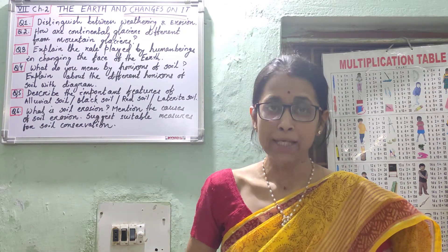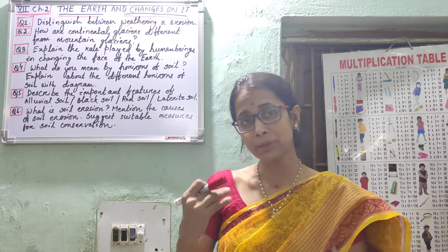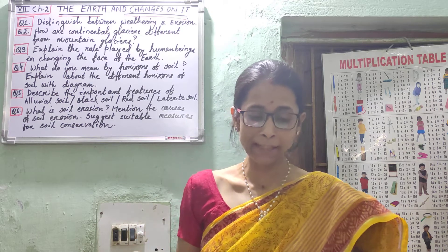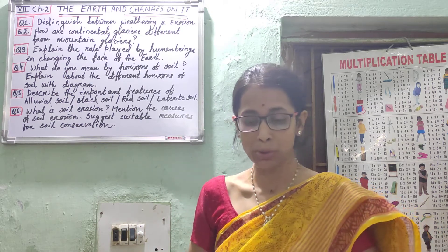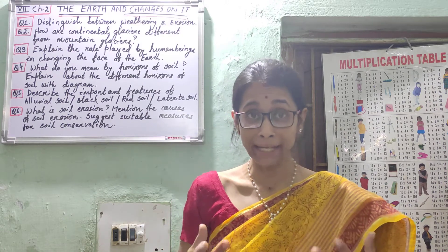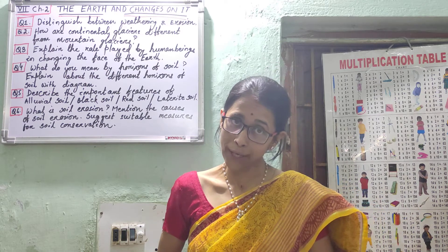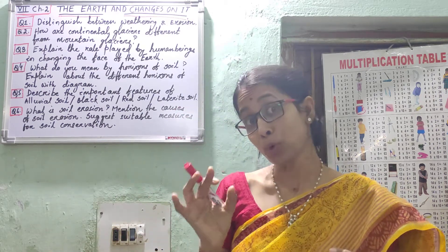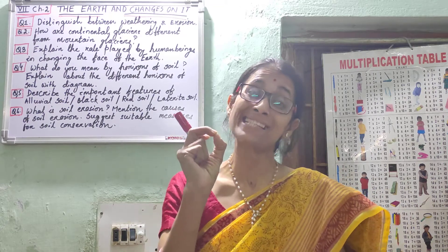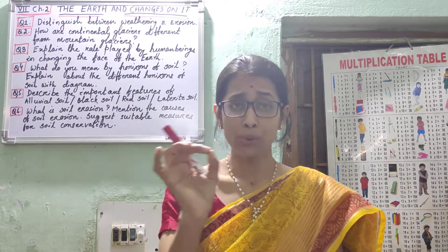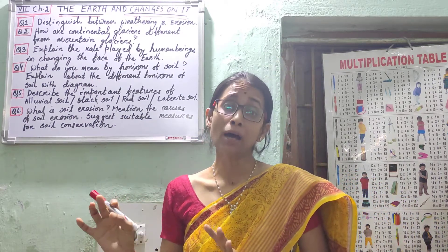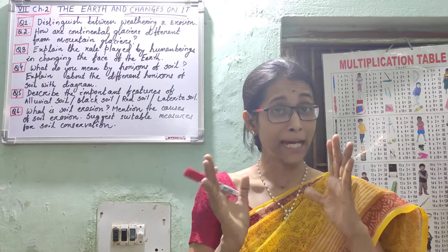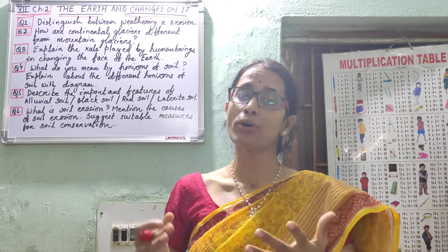There are four horizons of soil. From the bottom: the first horizon is bedrock or solid rock; above that lies the weathered rock, which is the second horizon; the third horizon is the subsoil; and the topmost horizon is the topsoil, which contains humus. Draw the diagram from your book neatly, and labeling is very important — mention topsoil, subsoil, weathered rock horizon, and solid rock or bedrock.